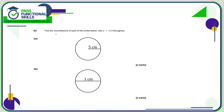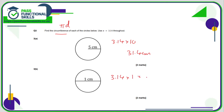Here we need to find the circumference — pi times the diameter. The radius is 5, so the diameter is 10: 3.14 times 10 gives 31.4 centimetres. For B, it's simply 3.14 times 1, so that's 3.14 centimetres.